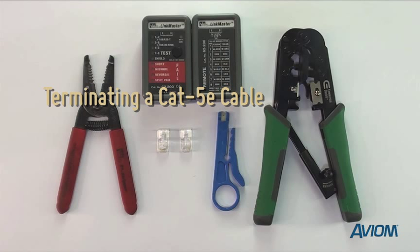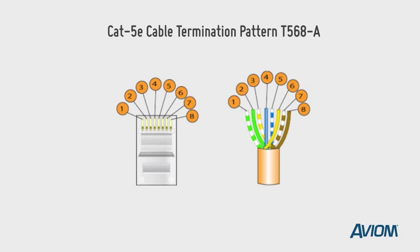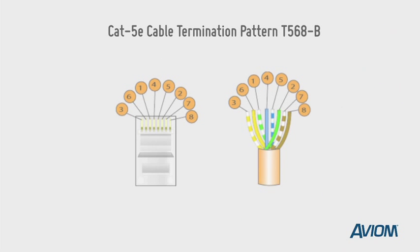In this segment, we are going to show you how to terminate a CAT5E cable with RJ45 connectors. There are two different wiring patterns, T568A and T568B, commonly referred to as A or B. It really doesn't matter which one you choose, provided that both sides of the cable are terminated the same.